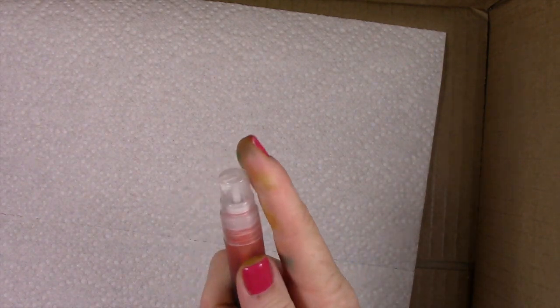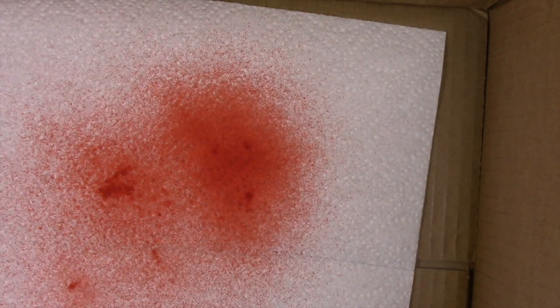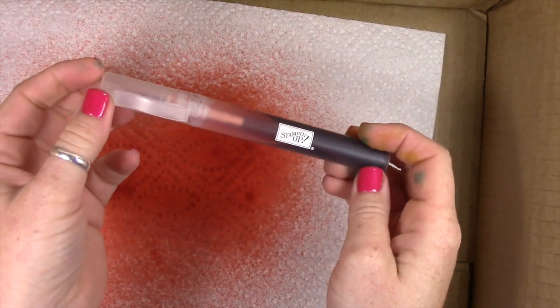Now I always do some test spritzes before I do it on a project because you can see how it has some big blobs right there. But that's it, that's how you create a color mister.